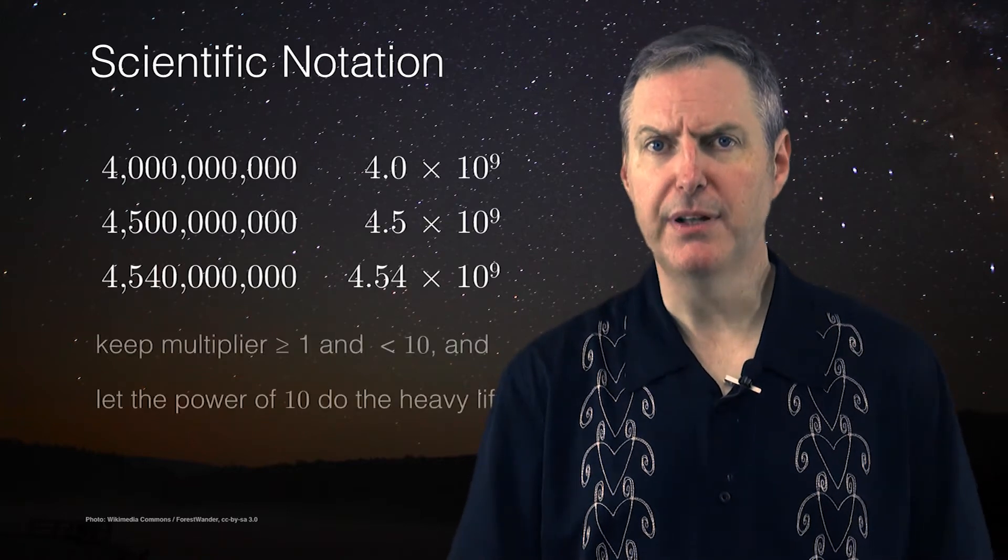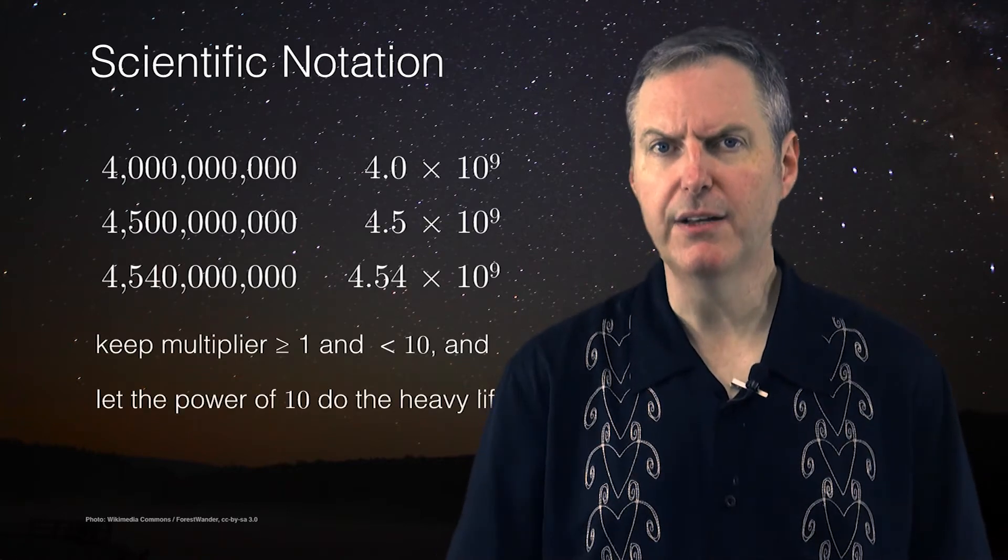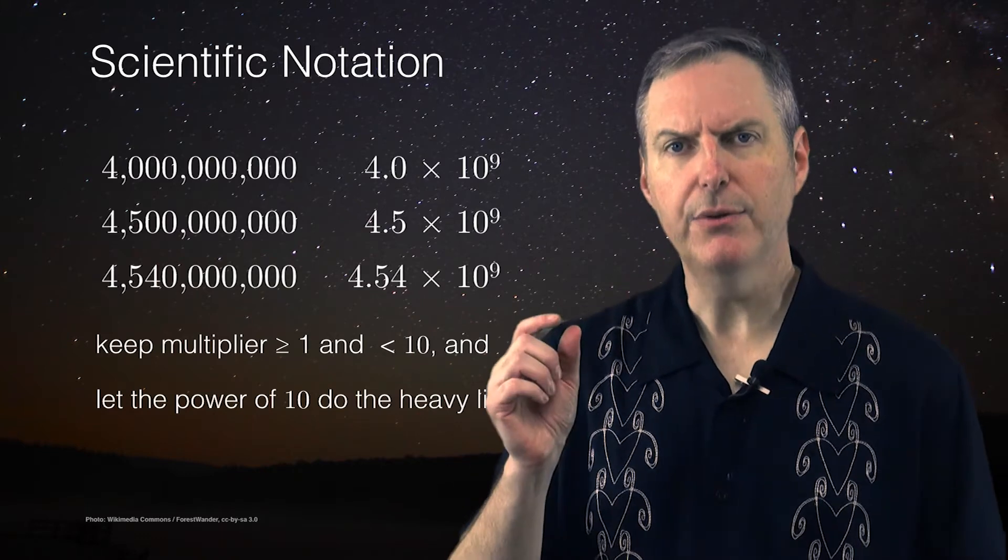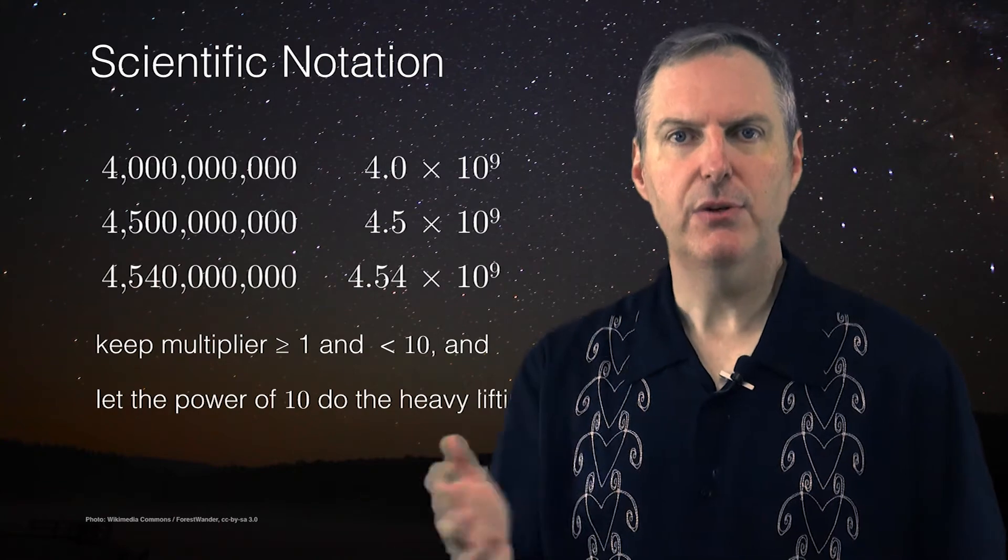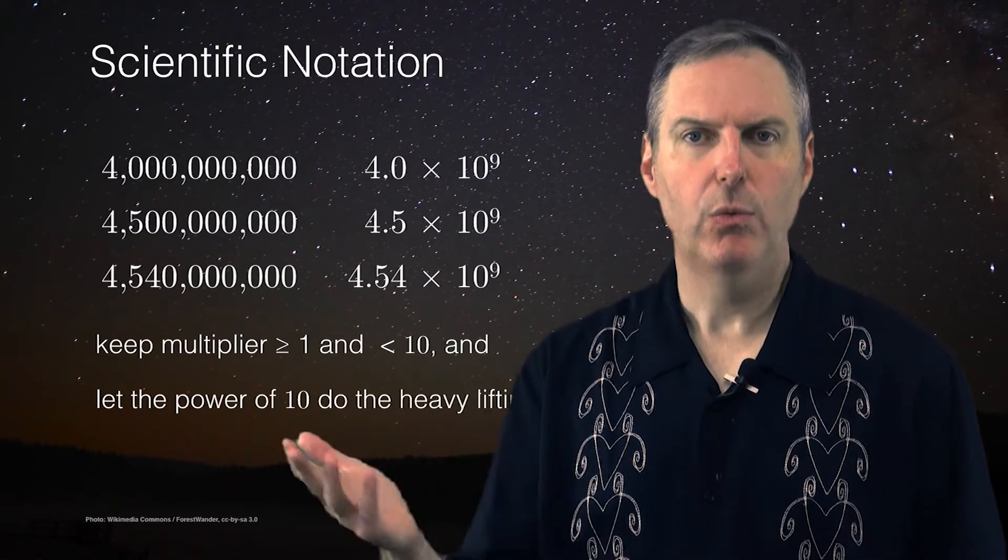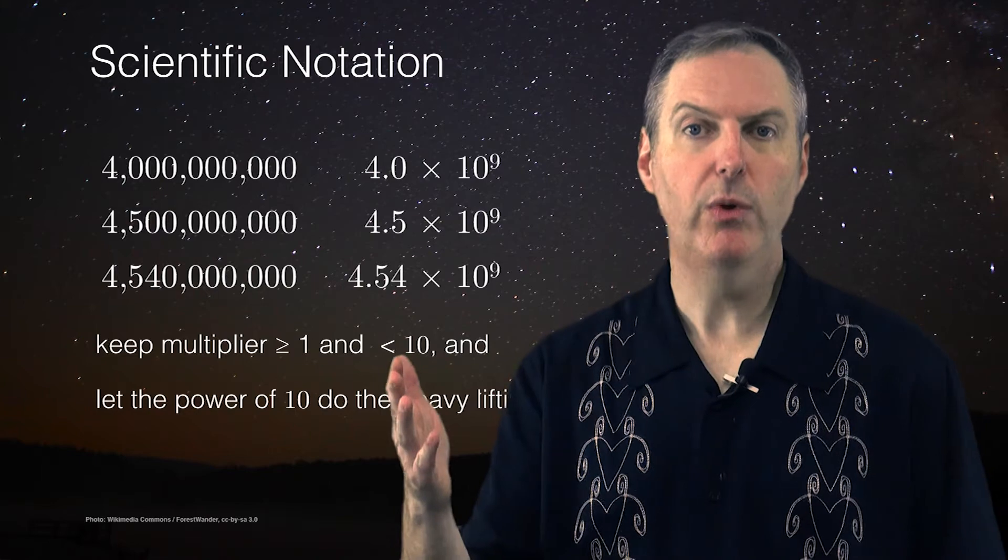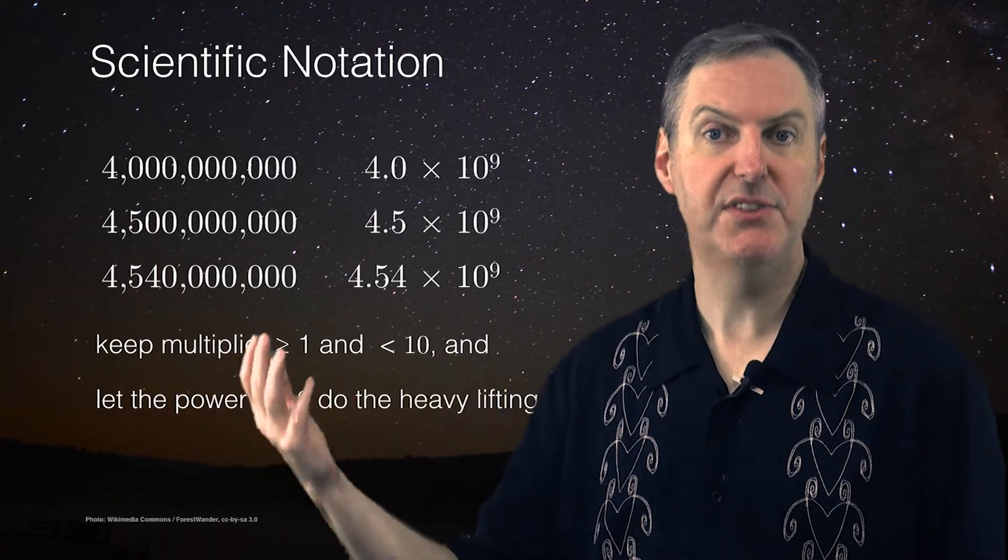And when it comes to the multiplier, another rule of thumb that we always follow is to keep that value somewhere between one and less than ten. So as long as it's in that range, we're in the same order of magnitude.